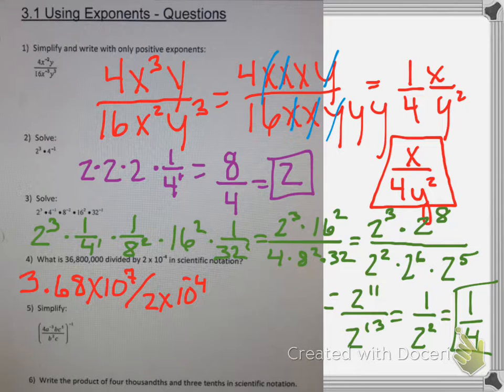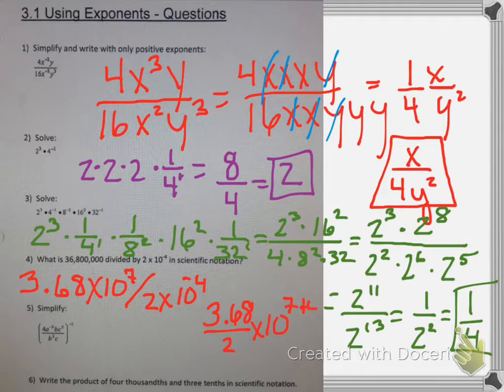When I divide exponents, I subtract them, but since I have negative 4, when I subtract that I actually add 4. So I'll divide the coefficients, 3.68 divided by 2, and subtract 7 from negative 4, which is the same as 7 plus 4. So my answer becomes 1.84 times 10 to the 11th.